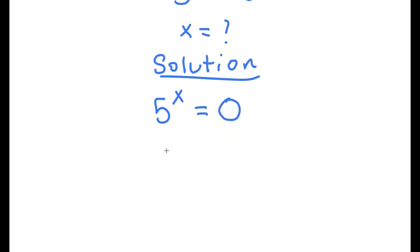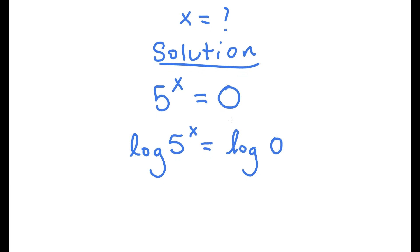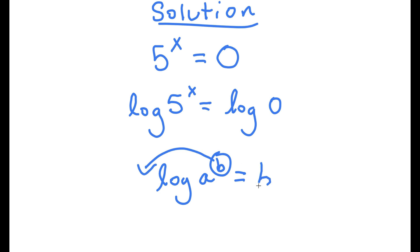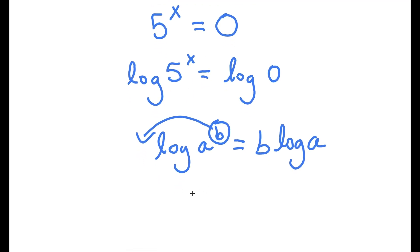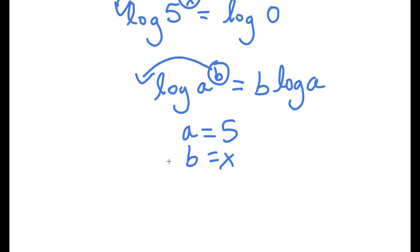I'm going to take the log on both sides, so now I have log of 5 to the power of x is equal to log 0. If I have something in the form log a to the power of b, I can move b to the front, so this equals b times log a. So log 5 to the power of x — we can think of a as 5 and b as x — so I can move x to the front.